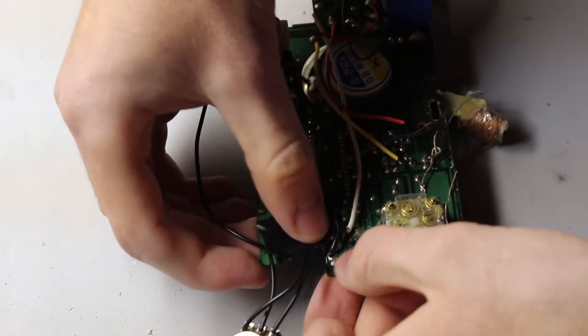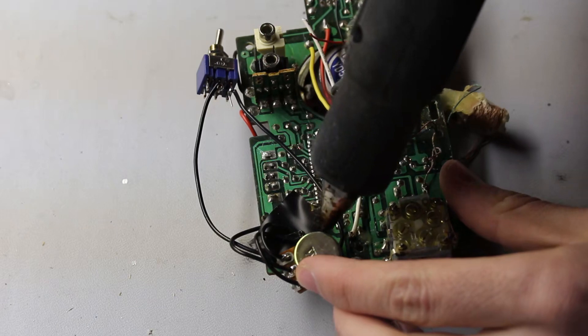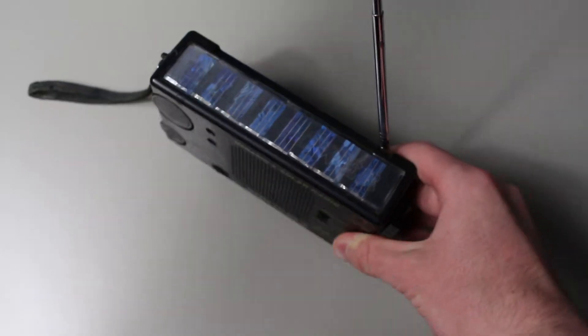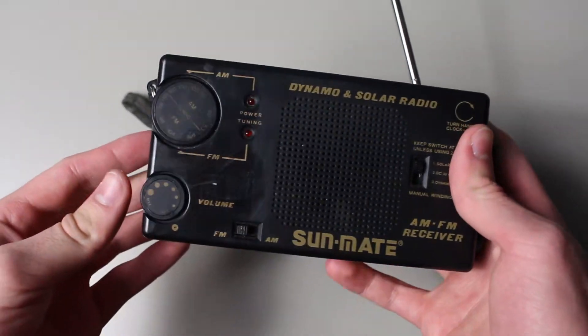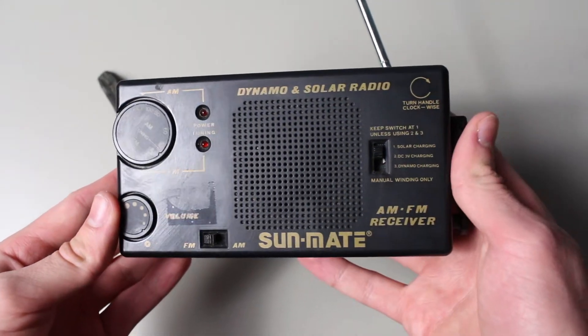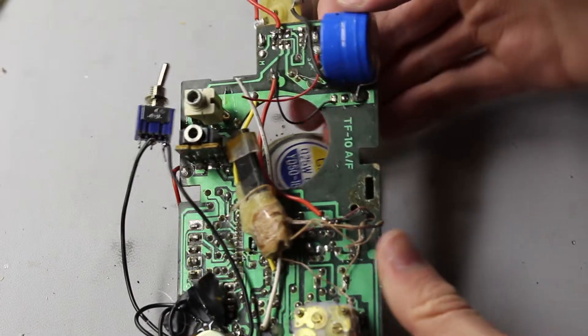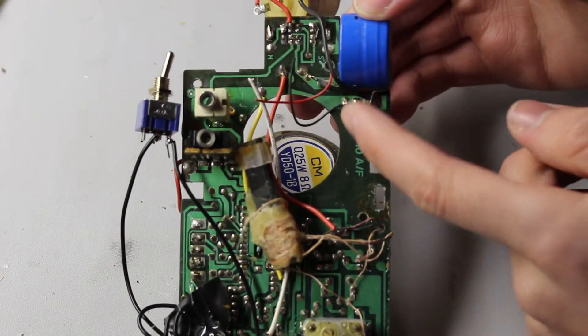With that out of the way, I put the board back to its initial state and we can search for the main problem that was causing issues before. If you go back to the beginning of the video, you'll remember that the radio seemed to have an issue holding any sort of charge. So let's begin by inspecting the battery. The age of the battery should be another indicator that it needs to be replaced.